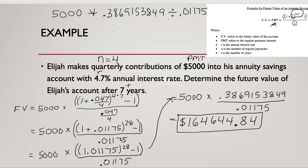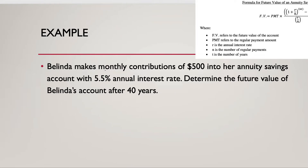Let's look at one more example, going a bit quicker. Belinda makes monthly contributions, so N equals 12 because there are 12 months in a year. The contribution is $500, which is the payment. The interest rate is 5.5%, which as a decimal is 0.055. We want to know how much she has after 40 years, so T equals 40.